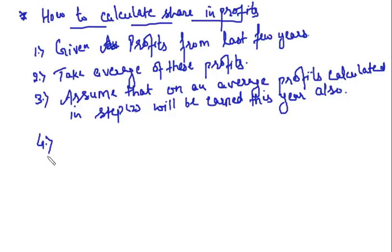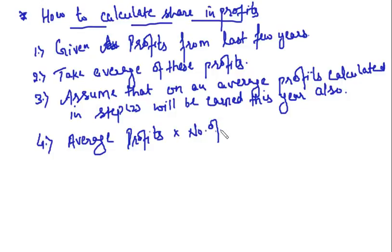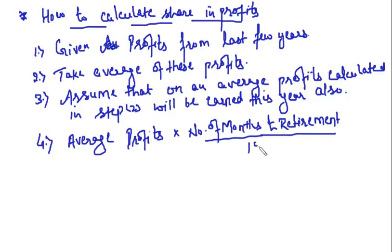You get the average profit figure for the whole year, so you can calculate for three months. The formula is: average profits multiplied by number of months to retirement, divided by 12. Here 12 is the total number of months in a year. This gives you the average profits for the period from the start of the accounting period till the retirement of the partner.